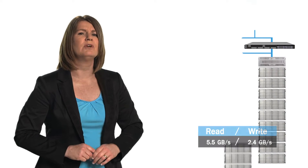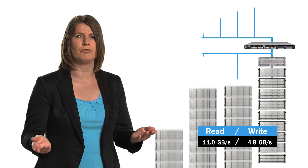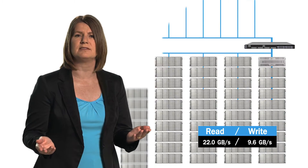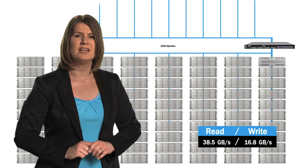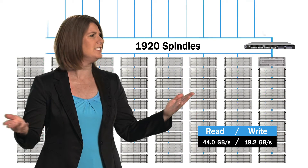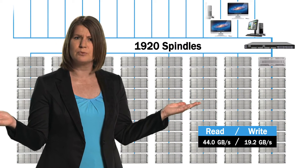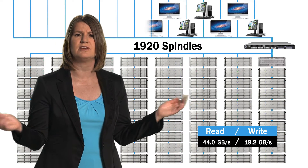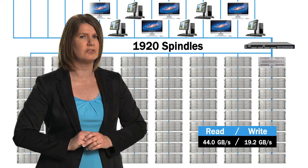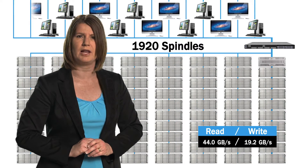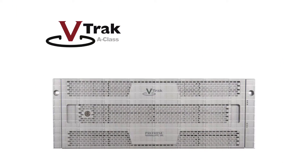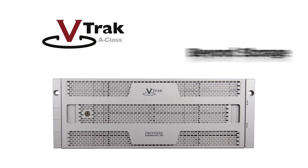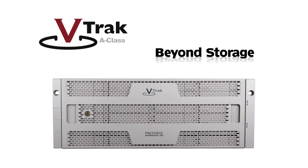Add a fiber channel switch and you can grow performance and capacity up to eight nodes — that's 1920 spindles — that will support thousands of clients. VTrack A-Class: beyond storage.